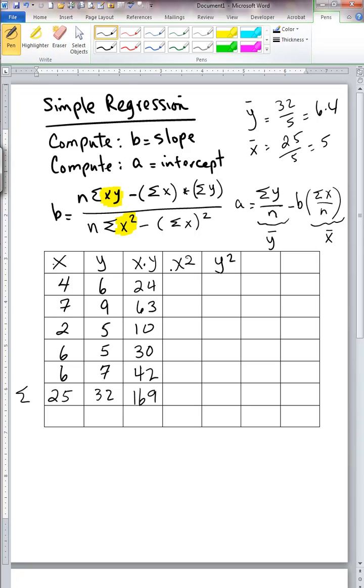So x squared is 4 squared. Let me go back to my black color. x squared, 4 squared is 16, 49, 4, 36, and 36. And that total is 12, 16, 22, 31, 141.